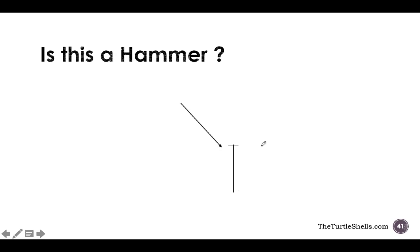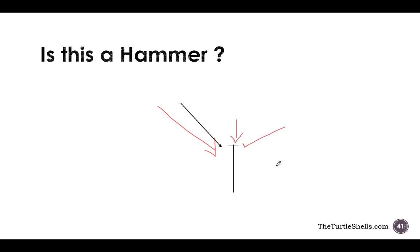Another nuance: is this one a hammer? Analyzing it — first condition, it is coming after a downtrend, satisfied. Second condition, the lower shadow is more than twice the height of the real body, satisfied, because the body itself is so small. Third condition, there should be no upper shadow, satisfied. Fourth condition, the real body should be as small as possible — again satisfied, it does not have any real body. So in my view, that is a hammer — a special kind of hammer which is very powerful. This is also called a dragonfly doji, because this is a doji candle where the open, high, and close are the same, and only the low is different.